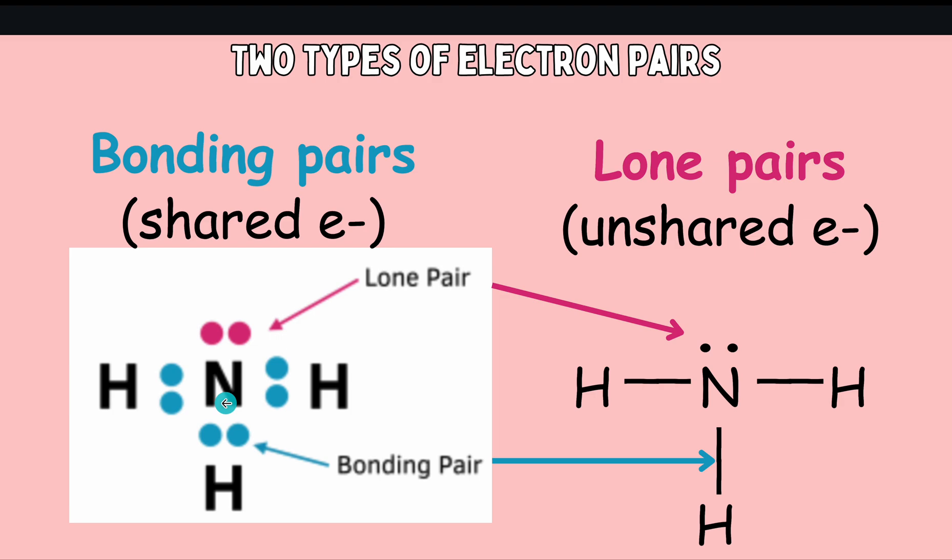In this example, we have ammonia, which is NH3, which is three hydrogens that are each covalently attached or covalently bonded to a nitrogen atom.